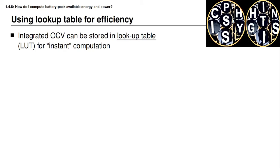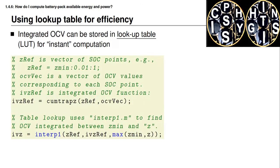When we compute the energy estimate, there's an integral equation involved that might look somewhat frightening, but this integral relationship can be pre-computed offline and stored in a lookup table for essentially instant computation in a real-time environment. On this slide you can see a block of code written for MATLAB or Octave — this code works in either. It has two sections: one section performs the integral approximation and stores it in a lookup table, and the second part looks up a value from that table whenever required.